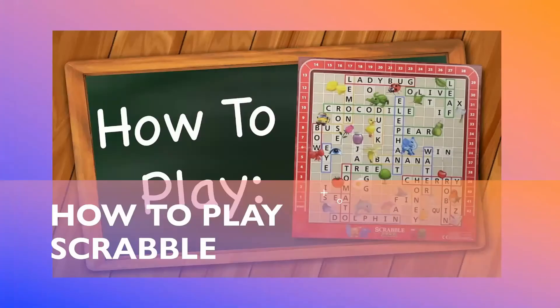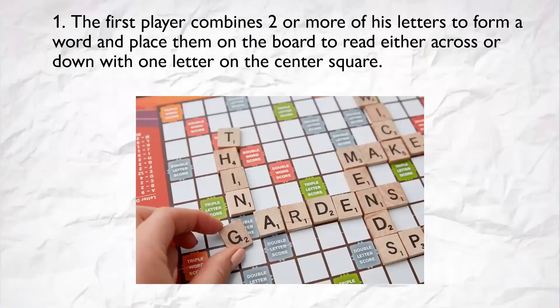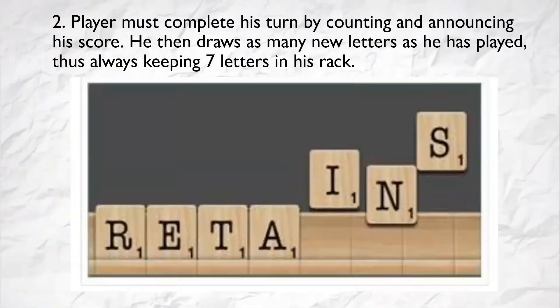Now let's learn how to play Scrabble. Rule 1: The first player combines two or more of his letters to form a word and places them on the board, to read either across or down, with one letter on the center square. Rule 2: A player must complete his turn by counting and announcing his score. He then draws as many new letters as he has played, always keeping 7 letters in his rack.